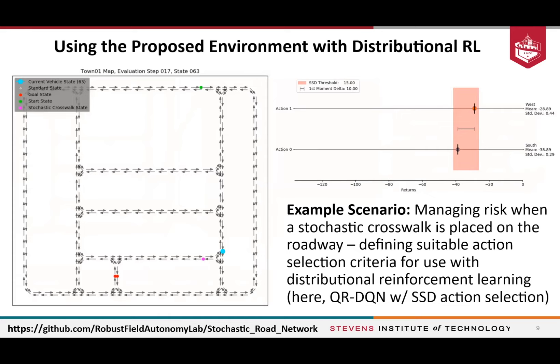Here's an example of using this stochastic road network for distributional RL. We're trying to get from the green dot to the red dot, evaluating actions at the blue dot. We drop one stochastic event — a crosswalk at the magenta dot — where the agent may be delayed a random amount of time due to pedestrians, and must learn this through experience. We evaluate different target deployment policies in distributional RL, particularly looking at second-order stochastic dominance as an action selection criterion. At that location, two competing actions have very similar expected returns, but one has much higher variance than the other.